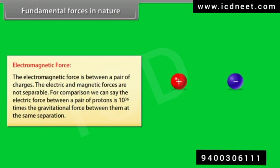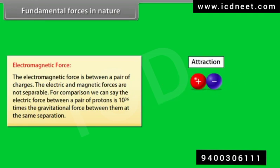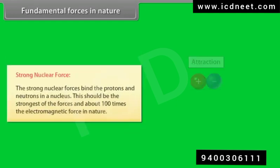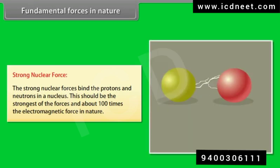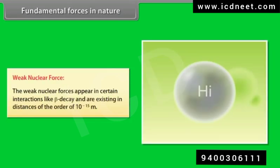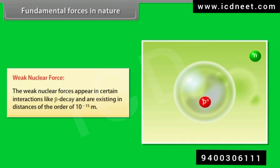The electromagnetic force exists between a pair of charges. The electric and magnetic forces are not separable. For comparison, the electric force between a pair of protons is 10 raised to the power 36 times the gravitational force between them at the same separation. The strong nuclear forces bind the protons and neutrons in a nucleus; it is the strongest of the forces, about 100 times the electromagnetic force. The weak nuclear forces appear in certain interactions like beta decay and exist at distances of the order of 10 raised to the power minus 15 meters.